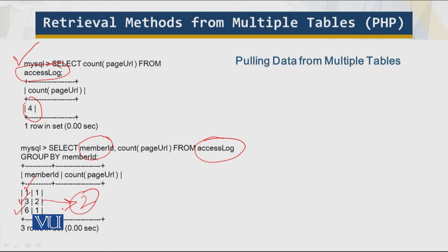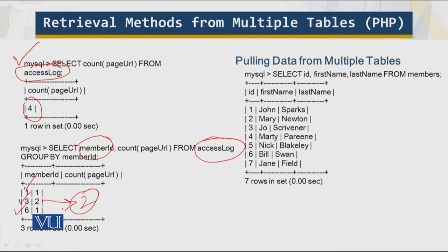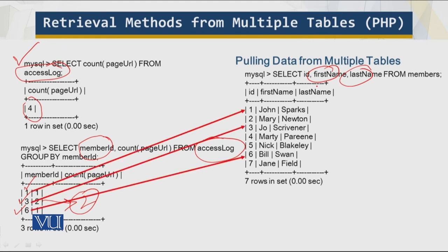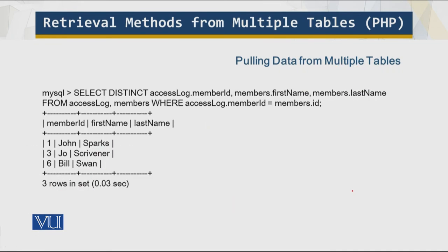This query lists all the first names and last names of my members. For simplicity, we are only showing results from a very small database. We can see about six or seven members — member one is John, and so on. Up till now we have not applied the join. Now I will apply the join — you can see the results. Based on this join, I now have the link between the member ID and the member name, giving us very useful information.